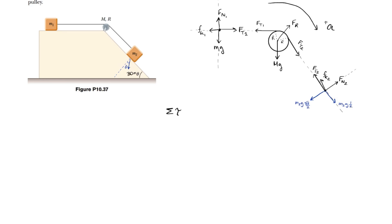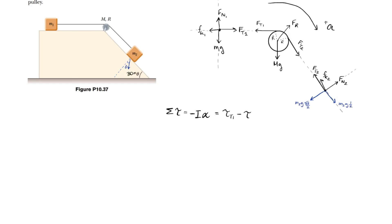Now let's write our torque equation. The sum of all torques equals moment of inertia times angular acceleration. Since the acceleration direction, by the right-hand rule, makes all torques negative, it equals negative moment of inertia times angular acceleration. Summing them up: torque from tension 1 minus torque from tension 2, since they are in opposite directions.